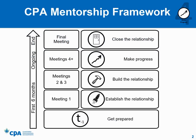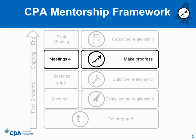You'll recall the CPA Mentorship Framework we previously presented to you. In this segment, we'll focus on making progress in your mentoring relationship as you continue to meet on an ongoing basis. You may have been meeting more frequently over the course of the first six months of your relationship. As trust and rapport are established, you will likely be able to meet less frequently, particularly in instances where the future CPA is steadily progressing and developing.